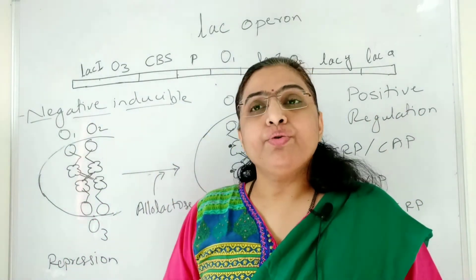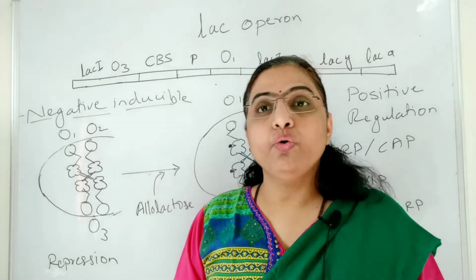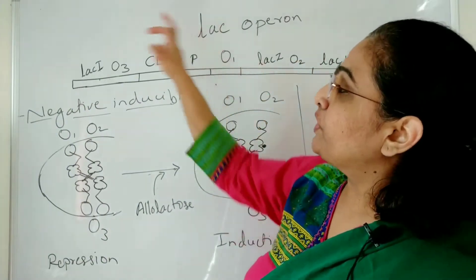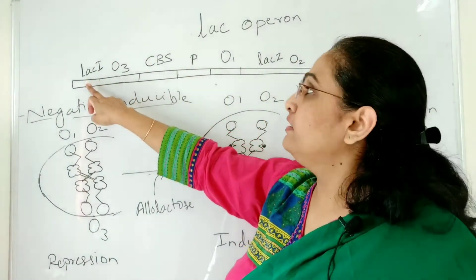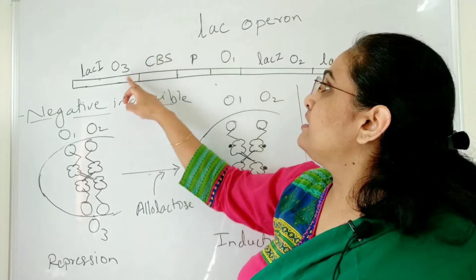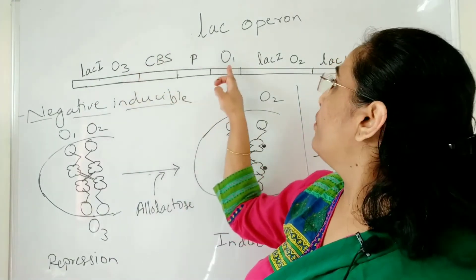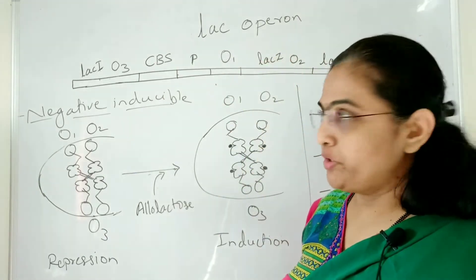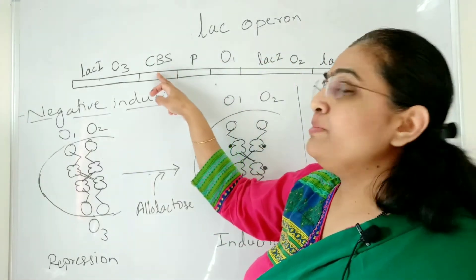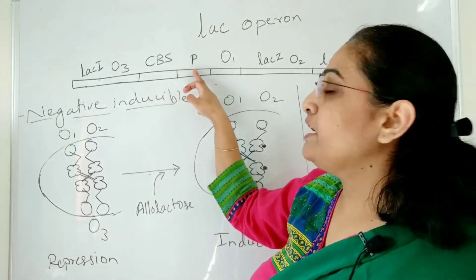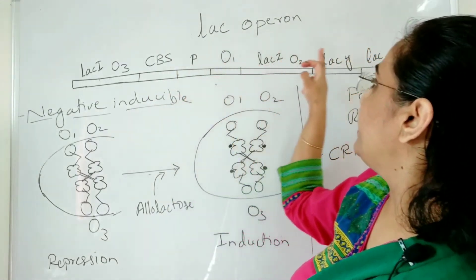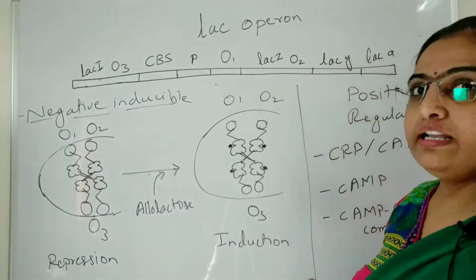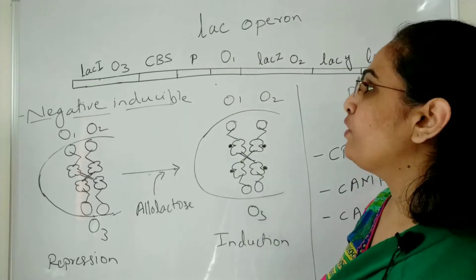Before going towards the actual regulations, we have to overview the structure of the lac operon. Here is the lac operon: lac I is the regulatory gene. Next there is O3, O1, and O2 — these are the three operators of the lac operon. There is also a CRP binding site (CBS), P is the promoter, and here are the three structural genes which are lac Z, lac Y, and lac A. So this is the structure of the lac operon.